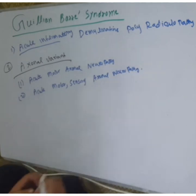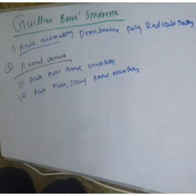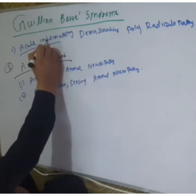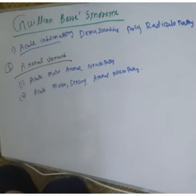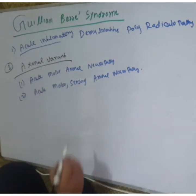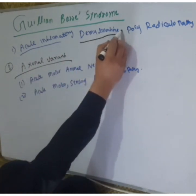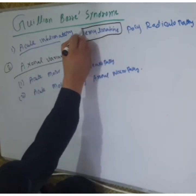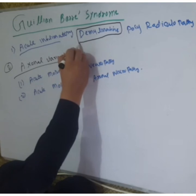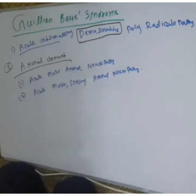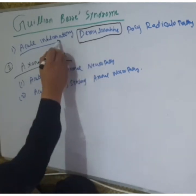In acute inflammatory demyelinating polyneuropathy, there is acute inflammation and demyelination of multiple nerve roots, occurring due to auto-antibodies formed against multiple nerves.